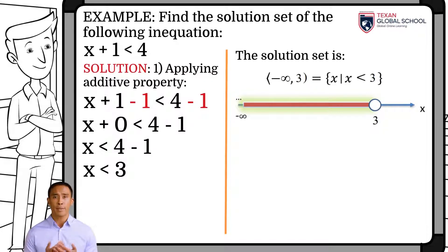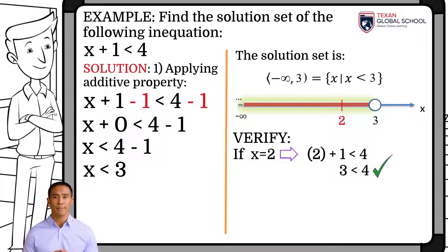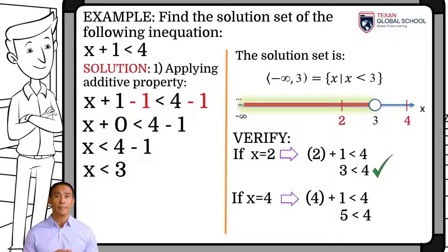To verify, we can substitute any value less than 3. For example, if x equals 2, we substitute in the original inequality and, when simplifying, results that the inequality is true, since 3 is less than 4. If we propose a value that does not belong to the solution interval, for example if x is equal to 4, substituting in the original inequality and simplifying results that it is false, since 5 is not less than 4.